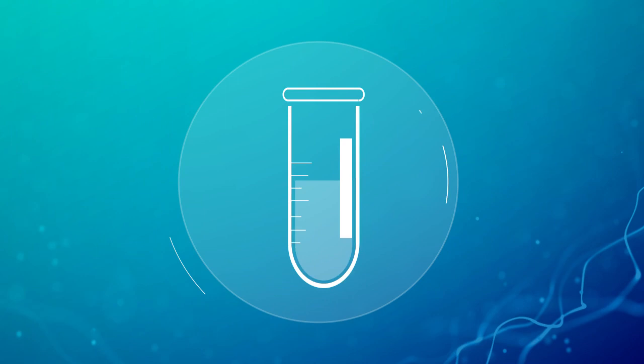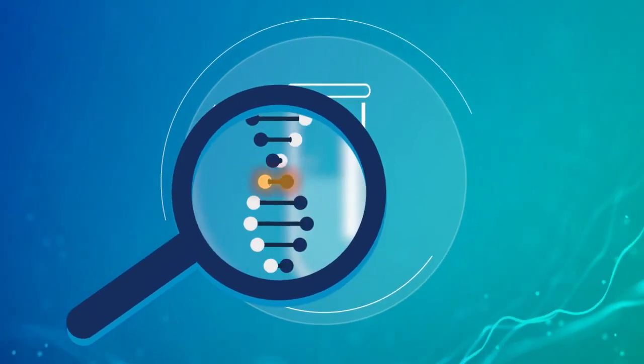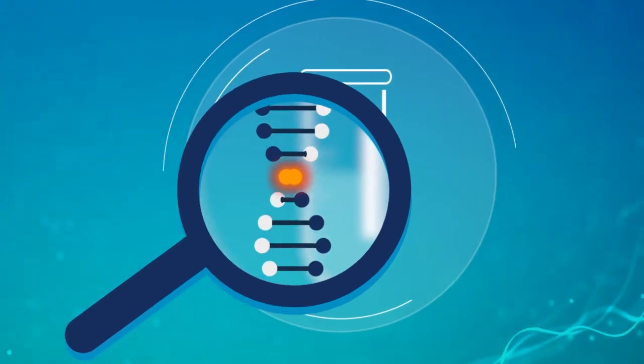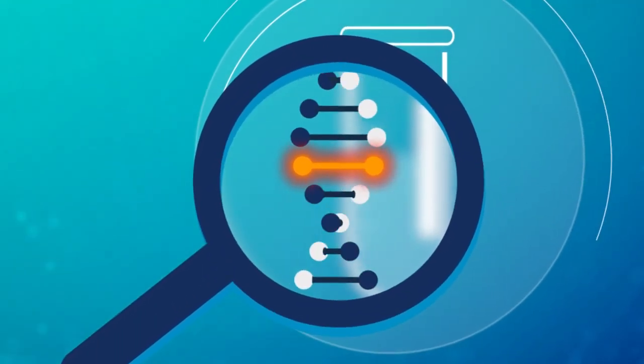Genetic testing for inherited cancer risk, also called hereditary cancer testing, looks at DNA from a sample of your blood or saliva to find variants, or changes in the DNA, that can make it more likely for you to get cancer in the future.